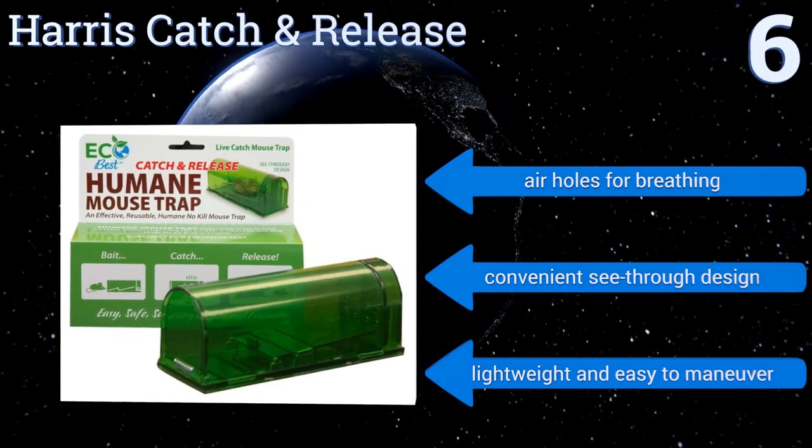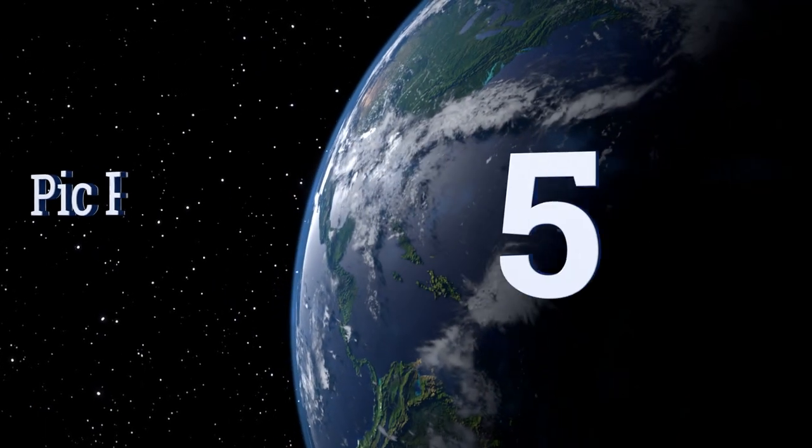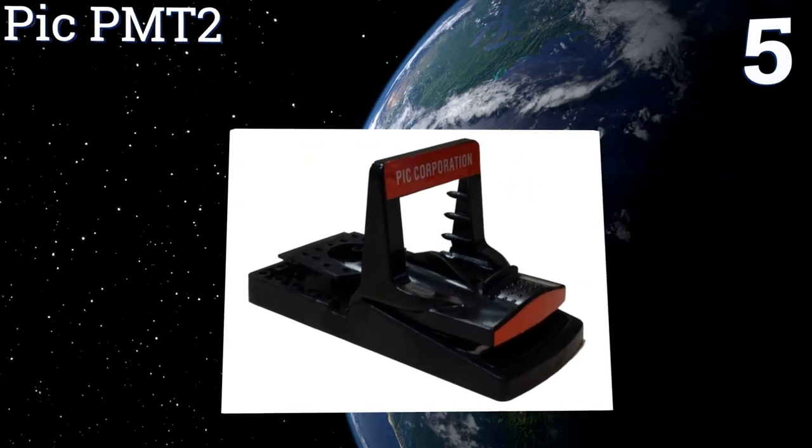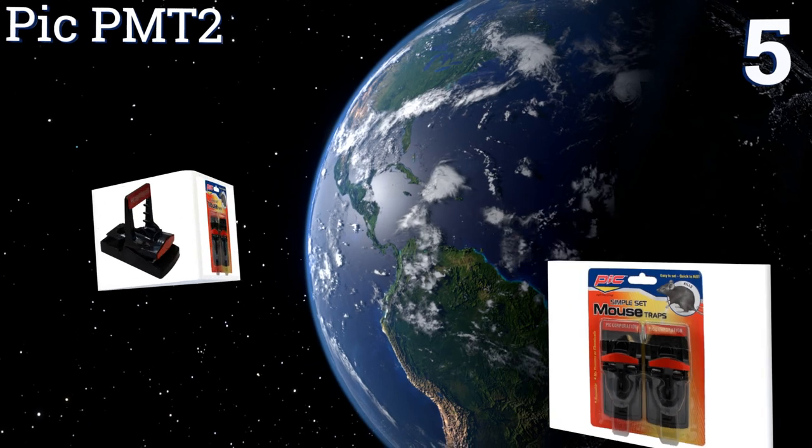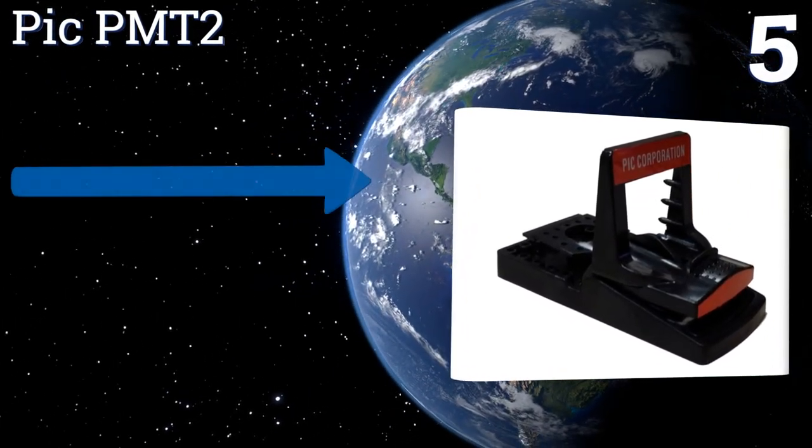Moving up our list to number five: the Pic PMT2 includes two separate traps, each one featuring a deep bait well that can be filled with peanut butter, chocolate, or any other sweet attractant for luring rodents.